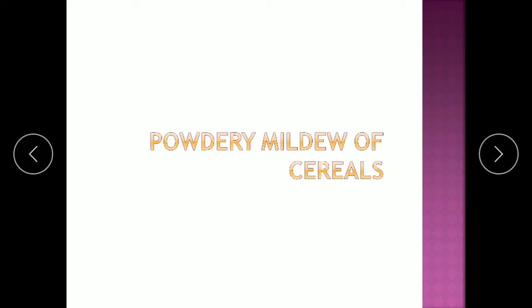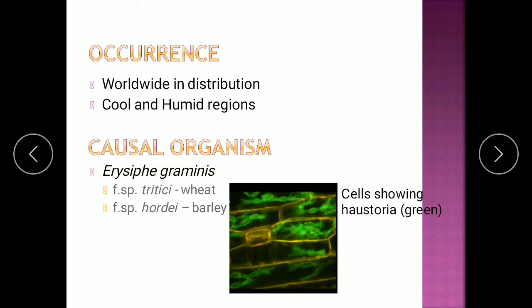Moving on to powdery mildew of cereals, which is caused by Erysiphe graminis. The subspecies is based on what type of plant it affects, called Formae specialis (FSP). So Erysiphe graminis FSP triticae causes powdery mildew of wheat, while Formae specialis hordei causes powdery mildew of barley. These are worldwide in distribution and are mainly found in regions that are cool and humid.